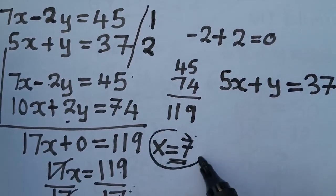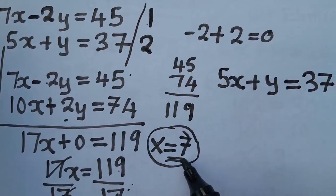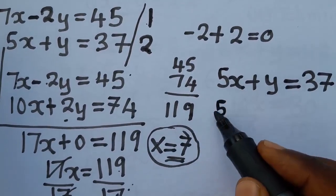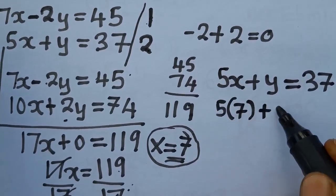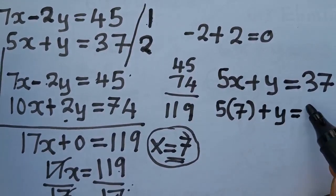Where there is x, you put what? You put 7. I'm going to have 5 times 7 plus y, which is equal to 37.